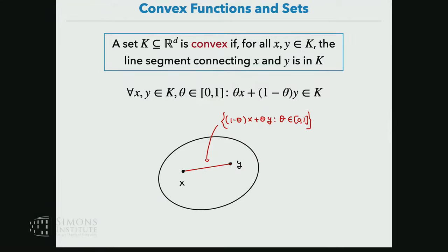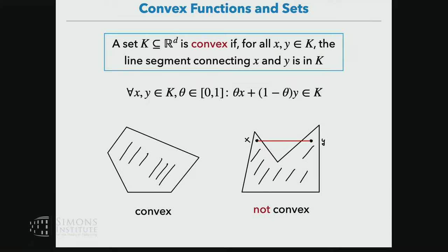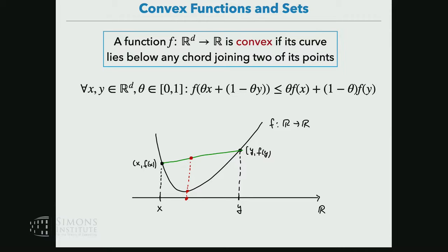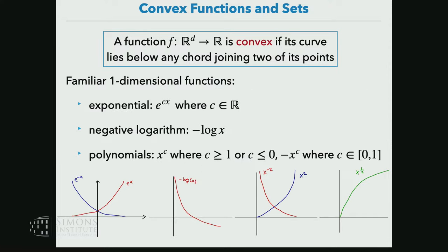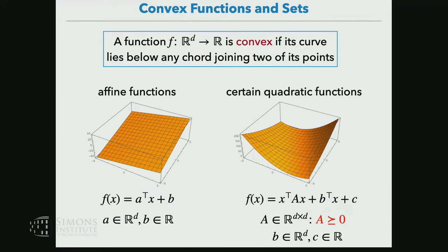First of all, what are convex sets? These are sets where if we have two points in the set and we look at the line segment between them, every point on the line segment is also in the set. For example, on the picture on the left it is convex, but on the right it's not convex. And convex functions are functions where the graph lies below any chord. There are many examples: familiar ones like the exponential, the negative logarithm, polynomial functions like (x-2) squared, and of course high-dimensional functions that are convex.